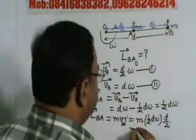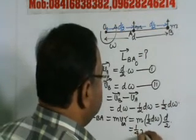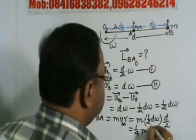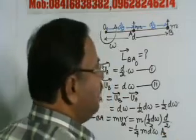this will be equal to how much? 1 by 4, M, D square into omega, and this will be the problem.